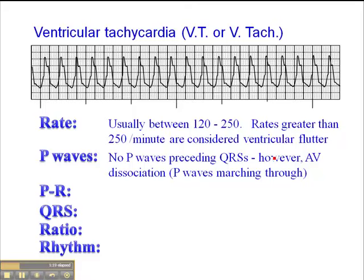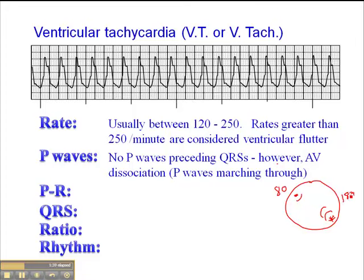In about 50% of VTACs — and I'll just draw this out here — we have an SA node firing at a rate of, let's say arbitrarily, 80 beats per minute, and a focus down in the ventricles firing at a rate of 180. What happens is we'll see evidence of atrial depolarization on the QRSs.